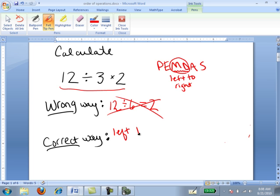Instead, we need to perform it left-to-right. And so we have 12 divided by 3 first, which is 4. And then we take the 4 times 2 and we get 8.